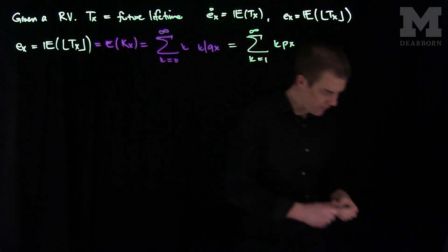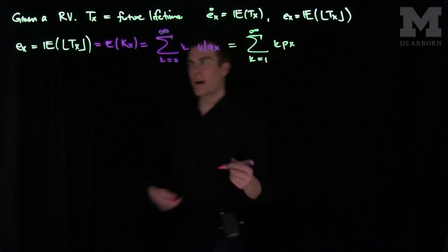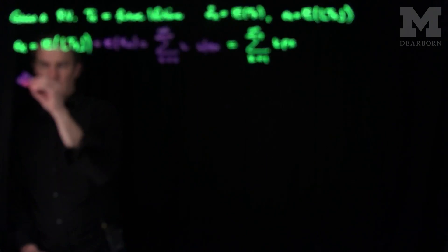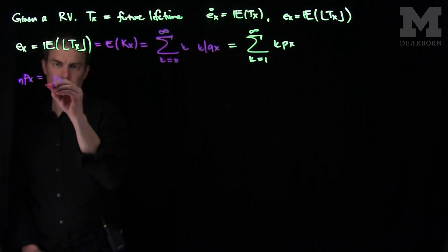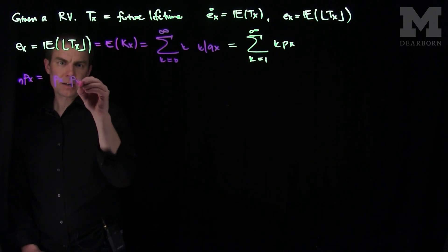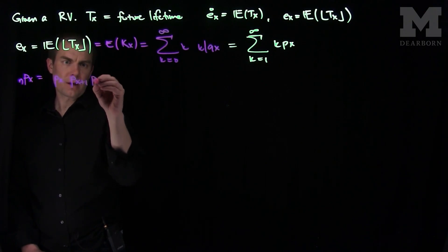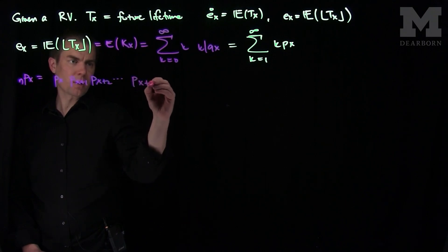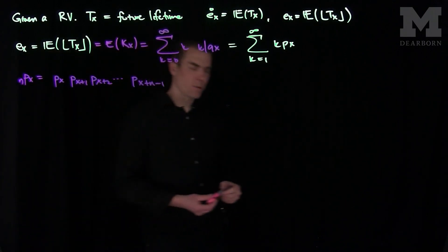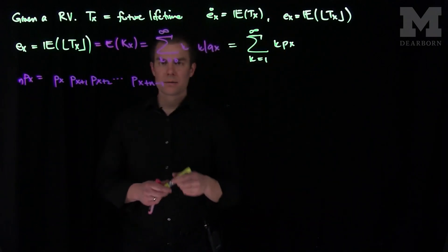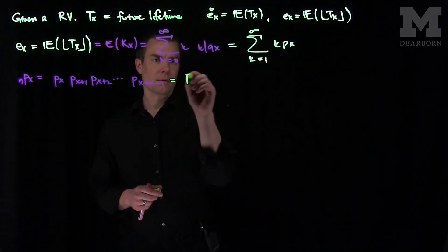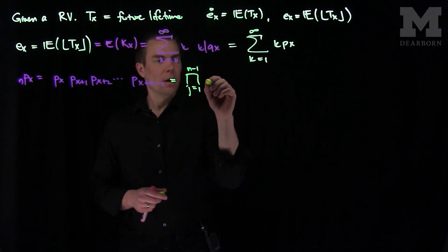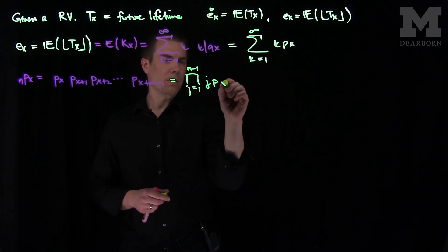We use the following fact: nPx equals Px times Px+1 times Px+2, all the way down to Px+n−1. We can succinctly write this as the product where J goes from one to n minus one of jPx.